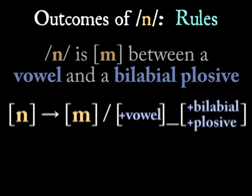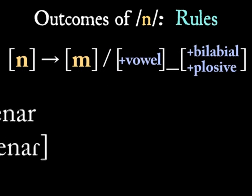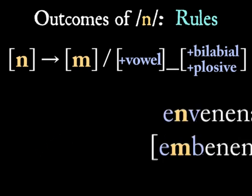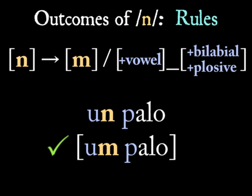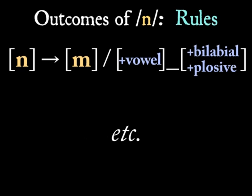We'll look for other words where the phoneme /n/ would show up between a vowel and a bilabial plosive to check this rule. What we'll find is that the rule holds. But we'll also try to find counterexamples that would force us to modify this rule for the sake of accuracy.